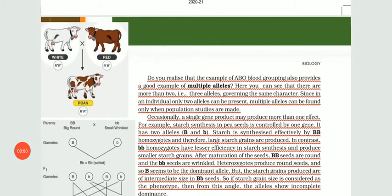Hello kids, I hope you all are fine. I am Raminder Kaur, your biology teacher, and this is chapter number 5, Principles of Inheritance and Variations. As we have talked about the monohybrid crosses where we have generally discussed the inheritance of a single gene, in which we studied two laws provided by Mendel: the law of dominance and the law of segregation.